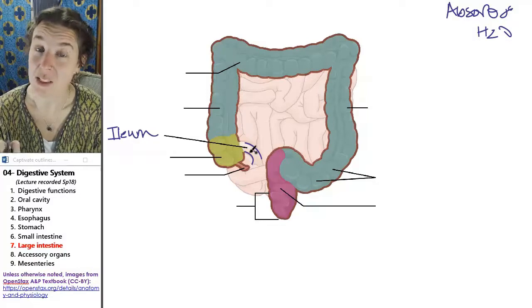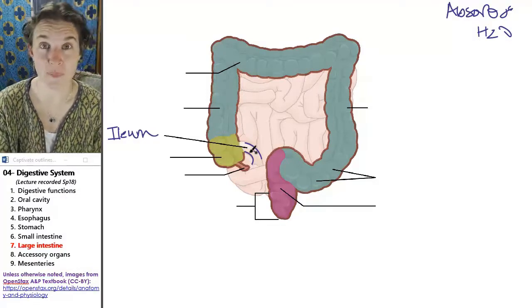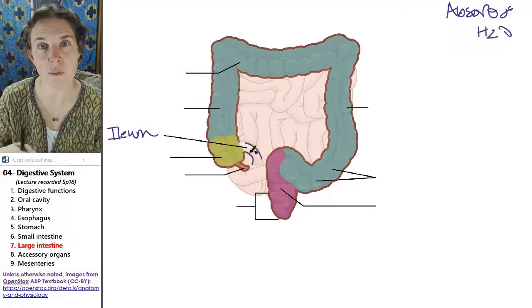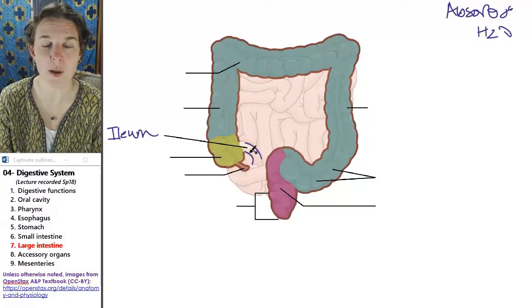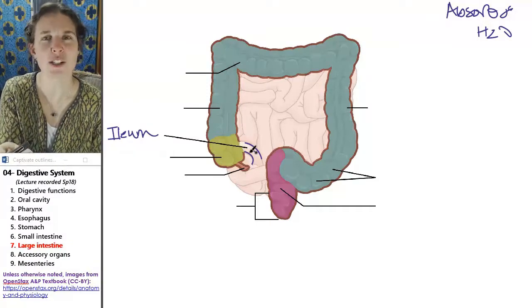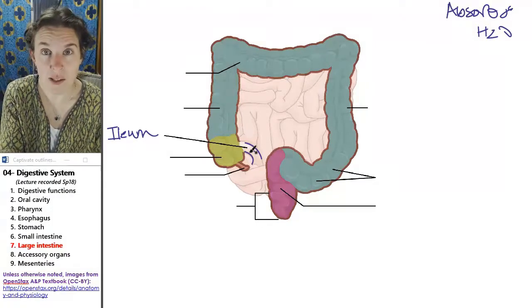You will not be able to tell if you are in ileum or jejunum or duodenum unless you have other markers nearby. For example, if you have a piece of small intestine and it's attached to a piece of large intestine, what is the small intestine part you are in? You're in the ileum.